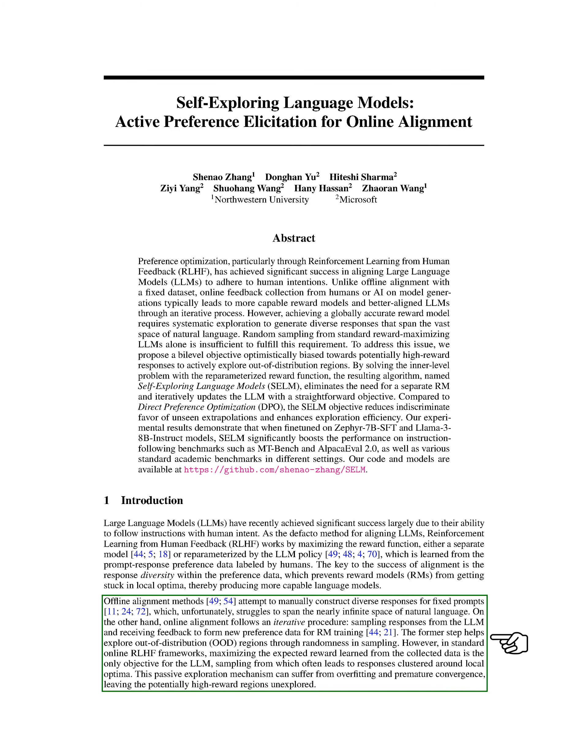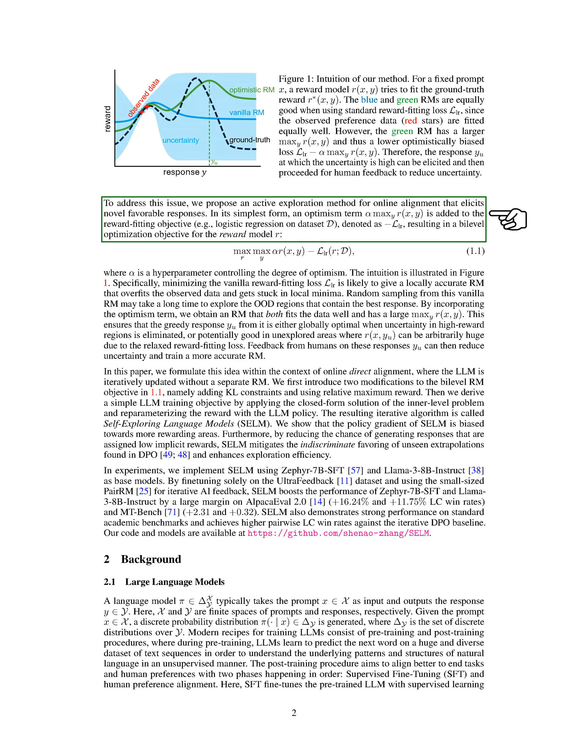Online alignment involves iteratively sampling responses from the LLM and receiving feedback to train the reward model. However, in standard online RLHF frameworks, the LLM's objective is solely to maximize the expected reward from the collected data. This can lead to responses being clustered around local optimal solutions, causing issues like overfitting and premature convergence.